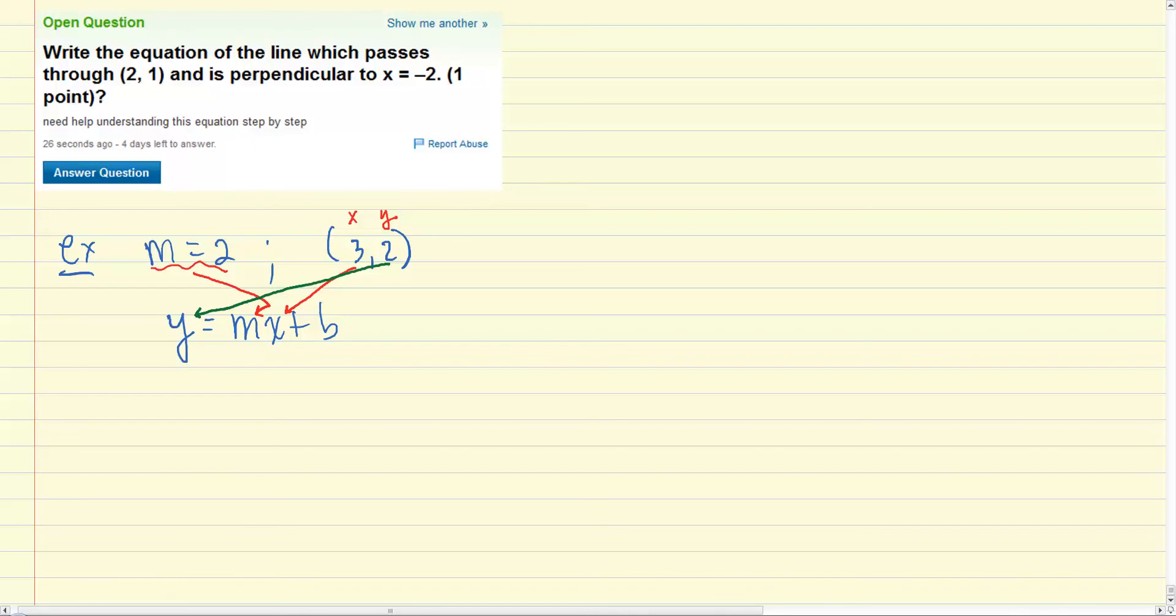And then from there what we do is we just go ahead and make that substitution and that's going to give you 2 equals 2 times 3 plus b, and that's going to allow us to solve for b. So we'll subtract 6 from each side and we find b equals negative 4.